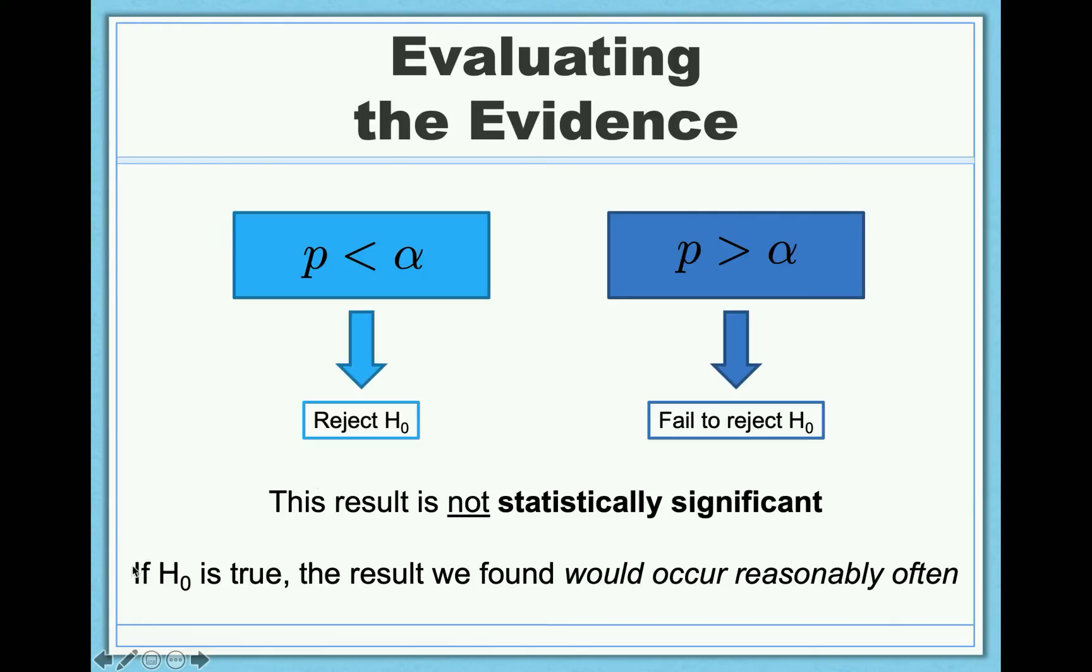Said in the more jargony way, if the null hypothesis is true, that is, if neuro-IQ is totally ineffective, the result we found, the mean of 105.9, would occur reasonably often. It's not rare enough for us to be convinced or surprised. And so this is the final decision that we make.